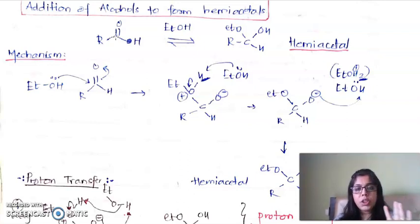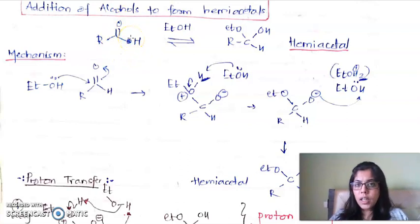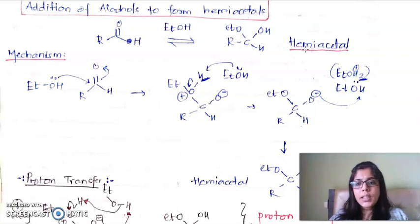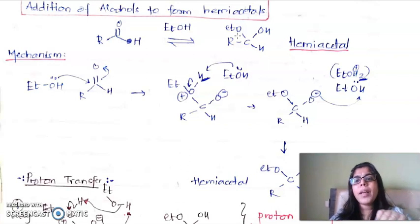This reaction is the addition of alcohols. When we have a substrate which is an aldehyde containing a carbonyl group and an alcohol — specifically ethanol (EtOH) — it gives a hemiacetal. Hemiacetals are compounds where my carbon is attached to OH along with an ether group OEt, that is, both OH and OR groups attached to the same carbon makes it a hemiacetal.